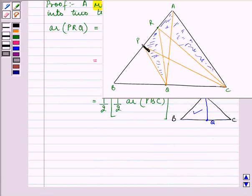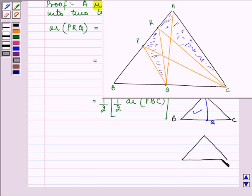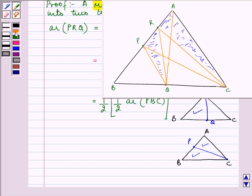Further, PBC is equal to APC. Let me draw a diagram. This is triangle ABC, and we know that P is the midpoint of AB. So CP will be the median, and we can say that area of PBC is equal to area of APC. So in place of PBC in the above step, we can write APC.